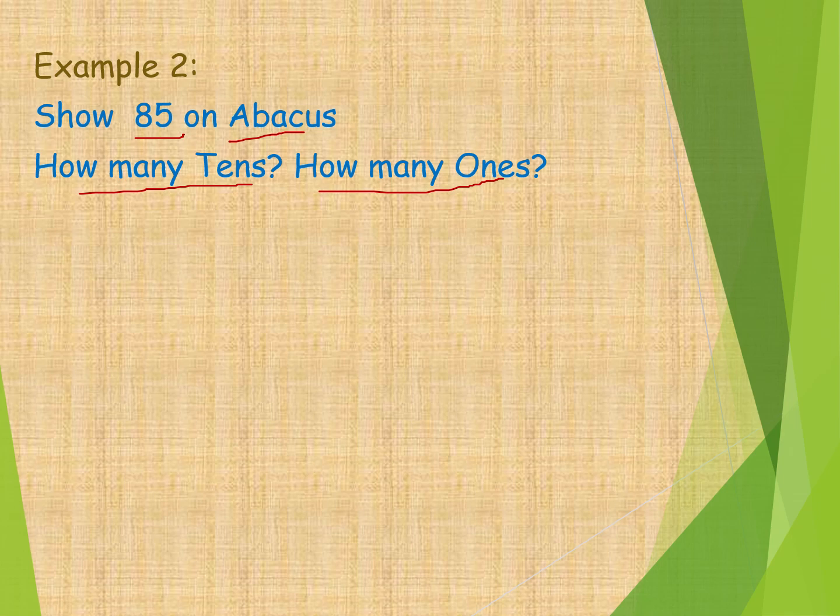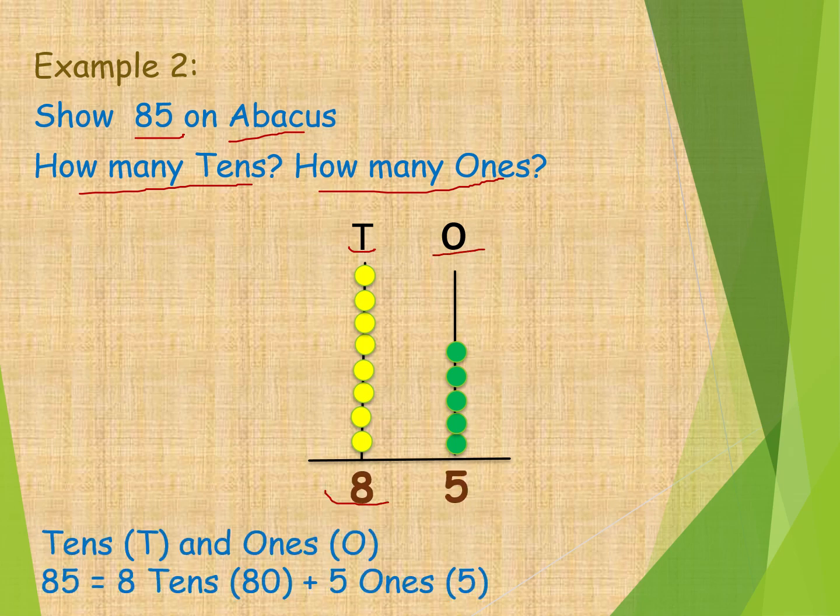Okay kids, is it done? Here we are taking again two lines for tens and ones places. In the tens place is having eight number, means we should draw eight beads. Now, ones place is having five number. We should take in ones place five beads. It becomes 85.